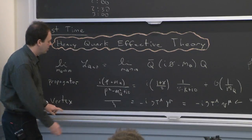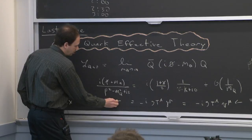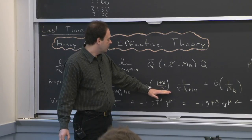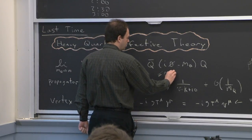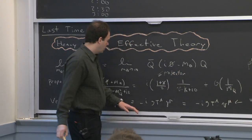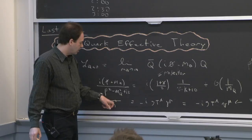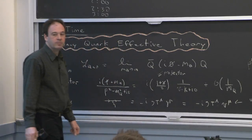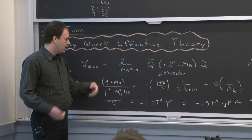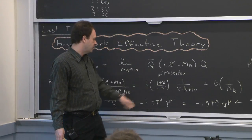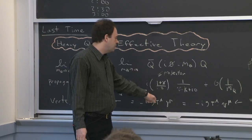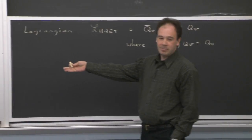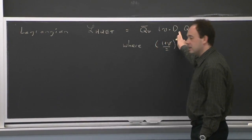We also thought about the vertex — just a gluon coupling to a heavy quark. If this is the result in QCD, this (1 + V-slash)/2 is a projector. If you square it, you get back the same thing. So if there are two propagators on either side, you can put a projector on either side of the vertex, and that gives you the result with just a V_mu. The Feynman rule for this vertex can be simplified by using the fact that these projectors sit on either side. Taking those two facts into account, we can encode them in a Lagrangian — we want a Lagrangian that gives that propagator and that lowest order vertex.